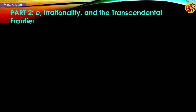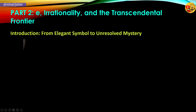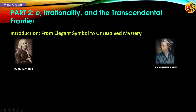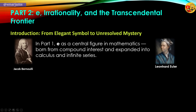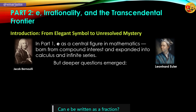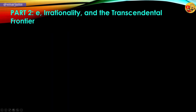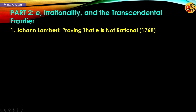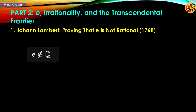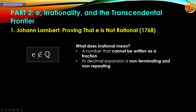In part 1, we witnessed how Leonhard Euler brought the number e to life, emerging from compound interest and evolving into a central concept in calculus and infinite series. But deeper questions remained. Can e be expressed as a simple fraction? Decades after Euler's work, in 1768, mathematician Johann Heinrich Lambert sought an answer. He wanted to know if e could be written as a ratio of two integers — something like a over b. Lambert's result was groundbreaking: e is not a rational number. In formal terms, e does not belong to the set of rational numbers.